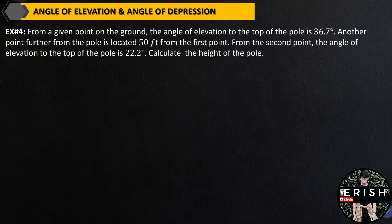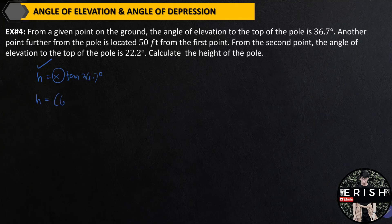This is not our final answer yet. Using either of the first two equations — let's use the simpler one: H equals X times tangent 36.7 degrees. Since we now know X, we can solve for H. H equals 60.5 feet times tangent 36.7 degrees. By calculating, the height is approximately 45 feet. This is the answer for example number 4.